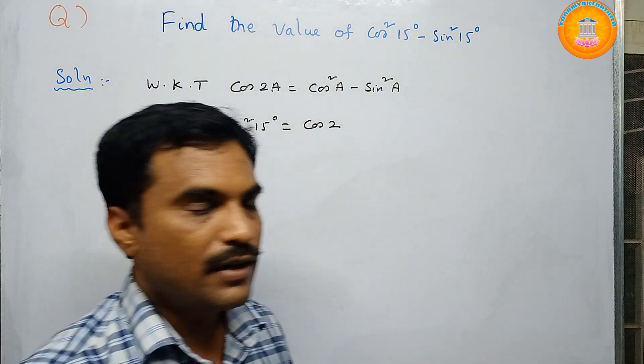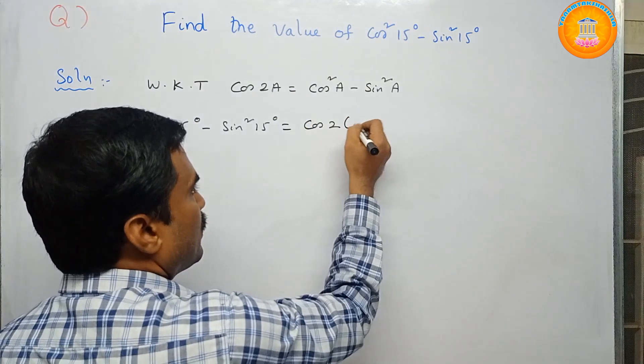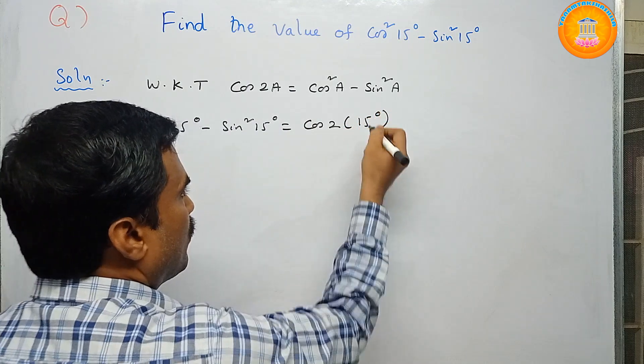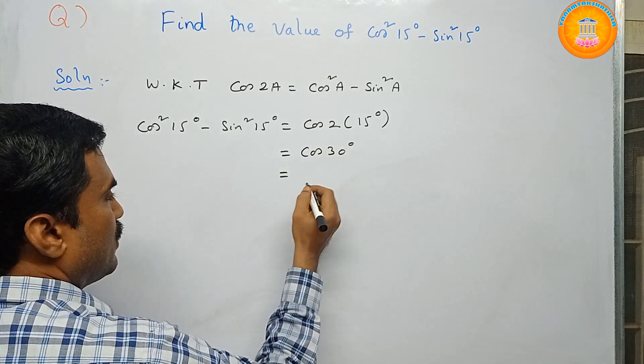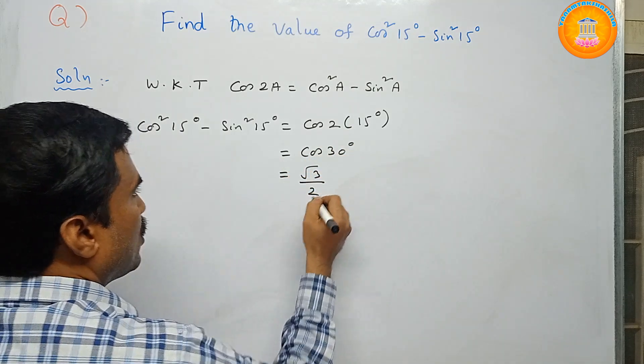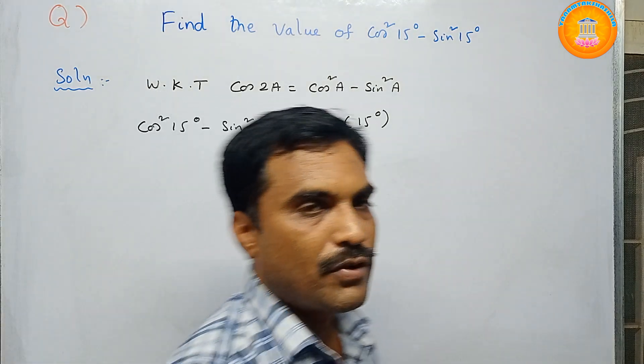So 2 × 15 = 30. What is cos 30 degrees? That is √3/2. So the value of cos²15° - sin²15° is √3/2.